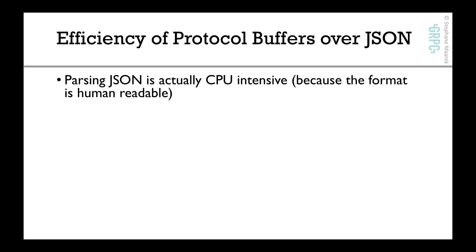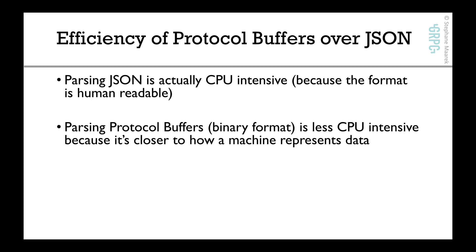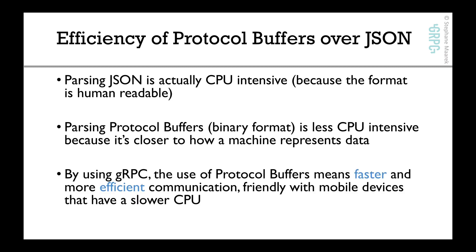Additionally, parsing JSON is actually quite CPU intensive, and there are lots of libraries trying to optimize that. But overall it still remains pretty CPU intensive, because the format is human readable — we can read it with our eyes. Protocol buffers, though, because it's binary and very close to how data is actually represented in memory, will be less CPU intensive. That's really important because protocol buffers means faster and more efficient communications, and devices with weaker CPUs — such as mobile devices or IoT devices — will have better performance with protocol buffers than with JSON. So all in all, protocol buffers is a no-brainer for gRPC.